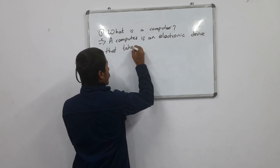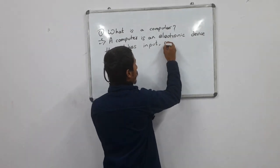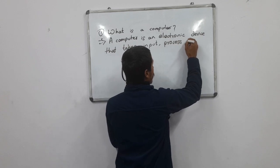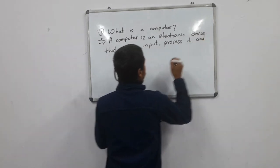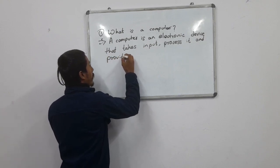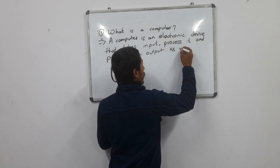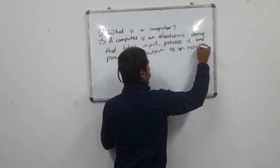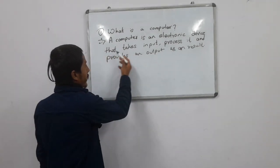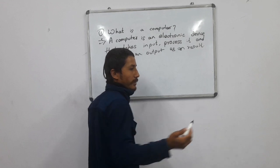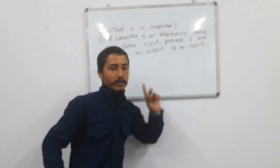That is input — just like that, input, process it. We are introducing the power of the device. This is an electronic device that takes the input, process it, and provides output as a result.